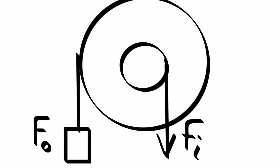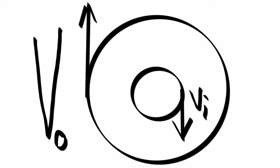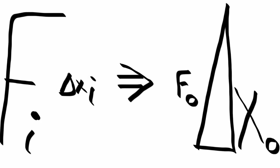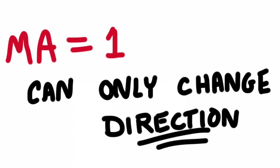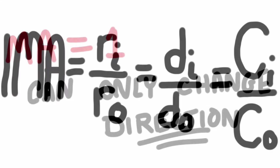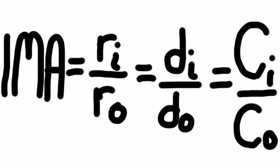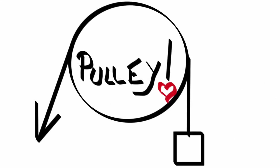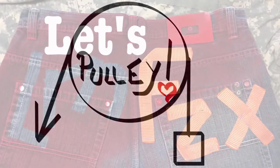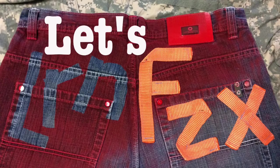Input force is on the smaller diameter, output force on the larger diameter. Input velocity is small, but the output velocity of the outside is nice and big. And a mechanical advantage of 1 can only change direction — that means the radius, diameter, and circumference ratio is always 1. So guess what? That's a pulley. A single pulley is a special case of a wheel and axle. Thank you.